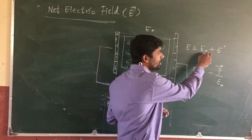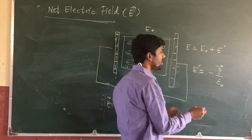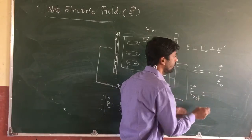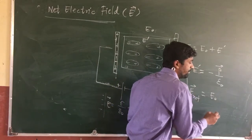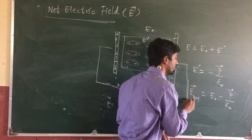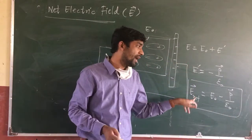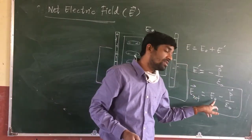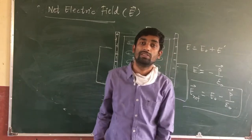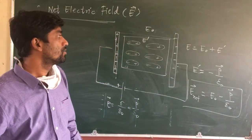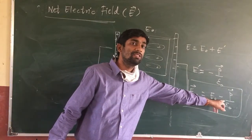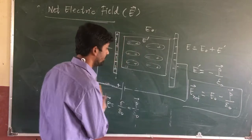This is your external electric field. So what is the net electric field? E net equals E naught minus the polarization vector P divided by epsilon naught, where epsilon naught is the permittivity of free space. So the net electric field is equal to E naught minus polarization vector divided by epsilon naught.